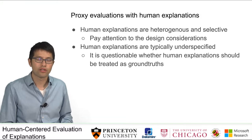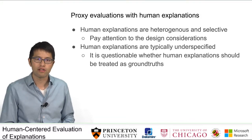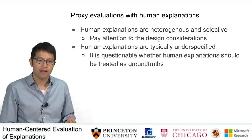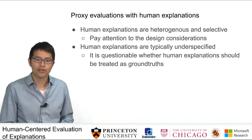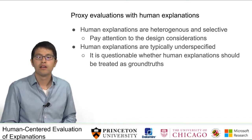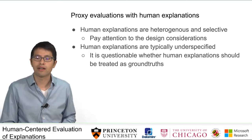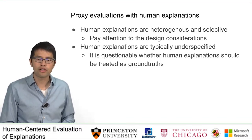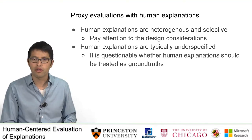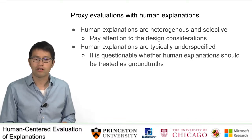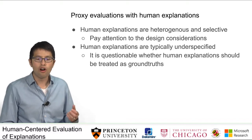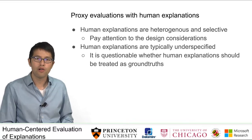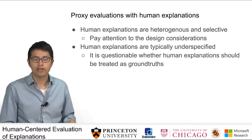Moving on to the second type of evaluation, Samuel Carden helped us review proxy evaluations with human explanations. Again, informed by the psychological foundation of explanations, we know that human explanations are heterogeneous and selective. Therefore, it is important to pay attention to design considerations — for example, small changes in the instructions can lead to explanations of very different properties. Another important corollary is that human explanations are typically underspecified; there is often information that the audience is expected to fill in. As a result, it is questionable whether human explanations should be treated as ground truth.